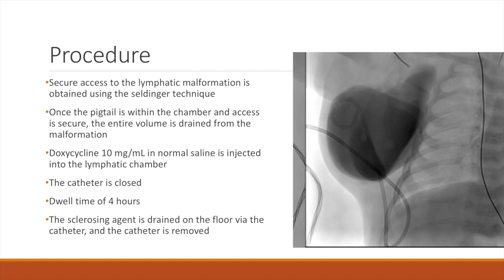Once the pigtail is within the chamber, the entire volume of the lymphatic malformation is removed. The volume is then replaced with doxycycline 10 milligrams per milliliter in normal saline. If there are other major chambers, these steps are repeated until all identifiable components have been accessed. The catheters are then closed and the sites are dressed, and the patient is sent to the floor where the doxycycline solution dwells in the malformation for four hours.